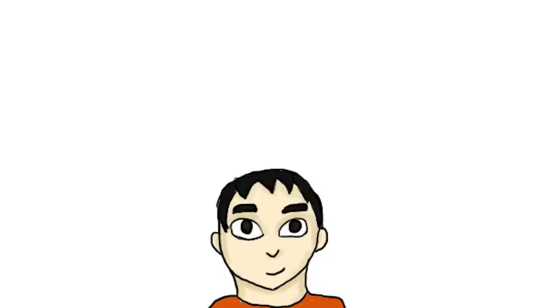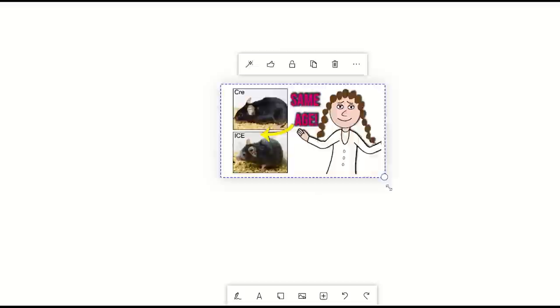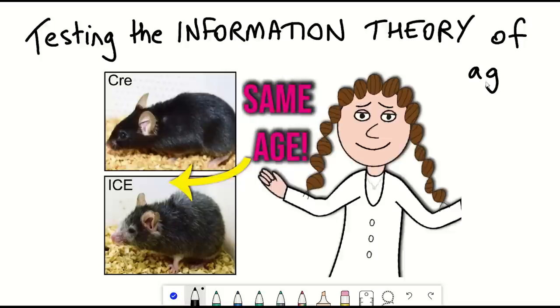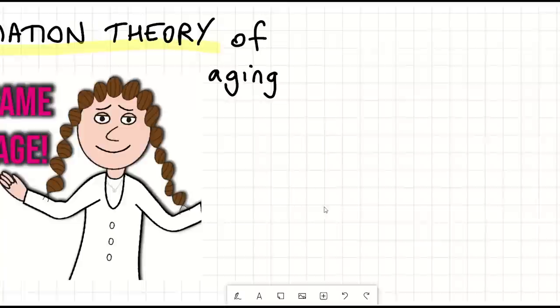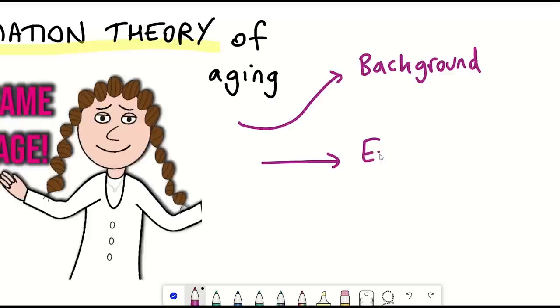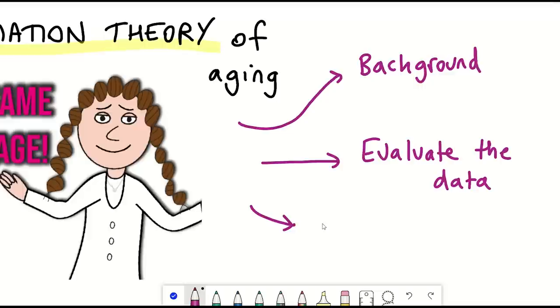Ageing. It's what we do and what I'm here to talk about today. In particular, addressing a recent paper that claims to test the information theory of ageing that has come out from David Sinclair's lab at Harvard Medical School and claims to drive ageing both forwards and backwards. So first I'll present the necessary background to the information theory of ageing and how the authors describe their findings.